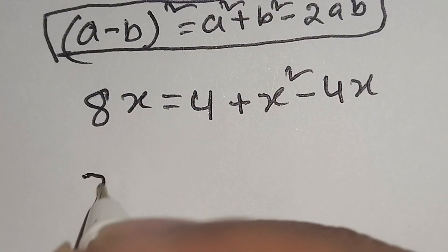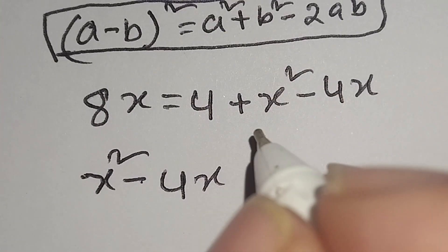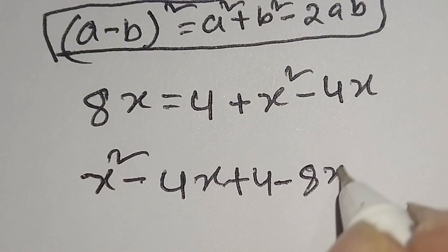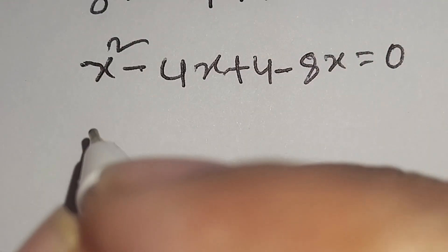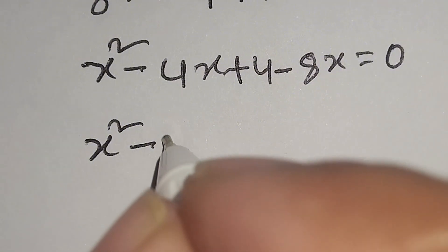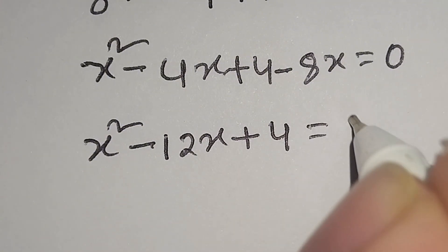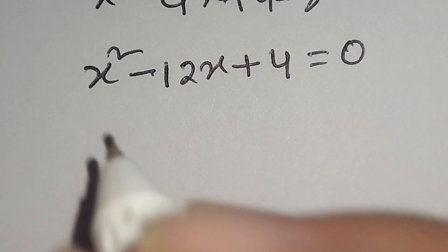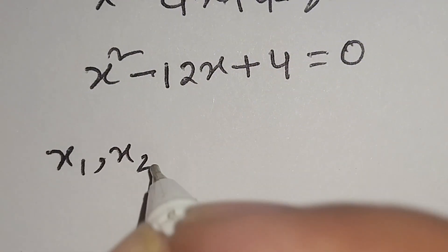So we have 8x equal to x² minus 4x plus 4. Now we will move 8x to the right side, giving us x² minus 4x minus 8x plus 4 equals 0, which simplifies to x² minus 12x plus 4 equals 0. This is a nice quadratic equation.